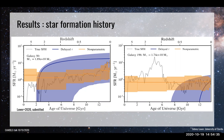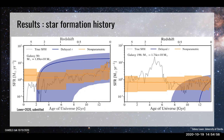Since over several time bins they're all covering each other in that scenario, you really can't differentiate from the prior. This is not an issue with Prospector specifically — it's simply a fact that there's no information in the SED to untangle that early star formation.